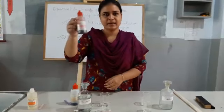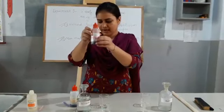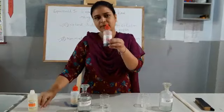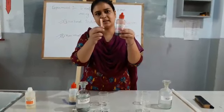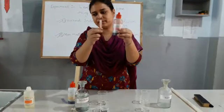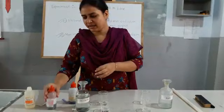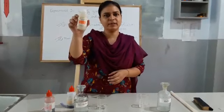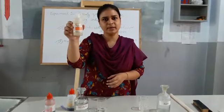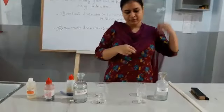The second indicator is litmus solution red, which is also available in the form of solution as well as strips. And in the man-made indicator, I am using phenolphthalein. So let us do our activity.